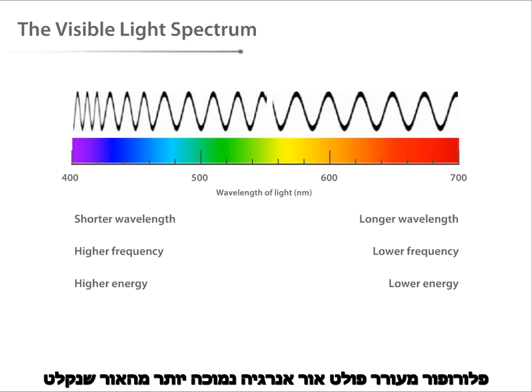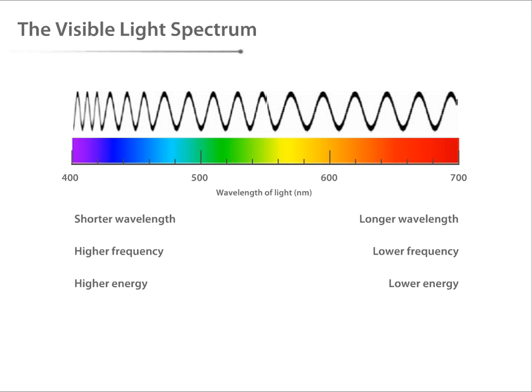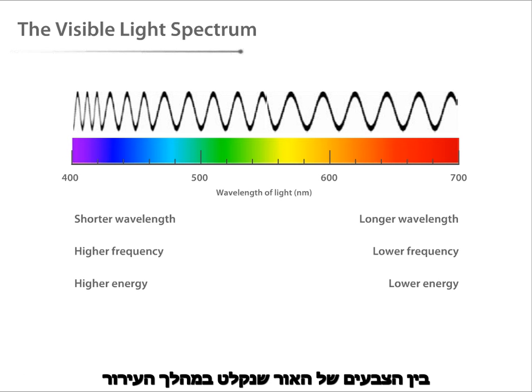As we stated before, an excited fluorophore emits lower energy light than the light it absorbed. Therefore, there is always a shift along the spectrum between the color of the light absorbed by the fluorophore during excitation and the color emitted.